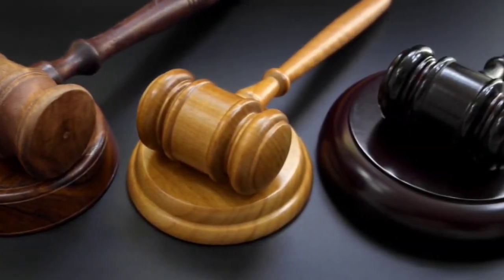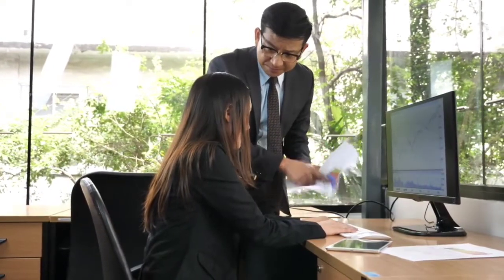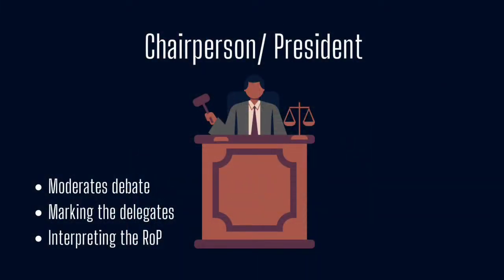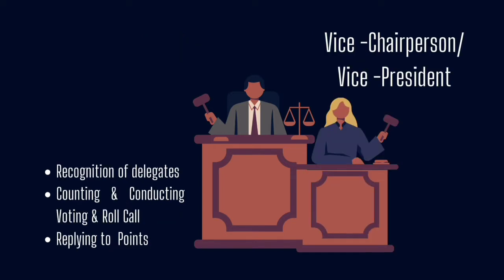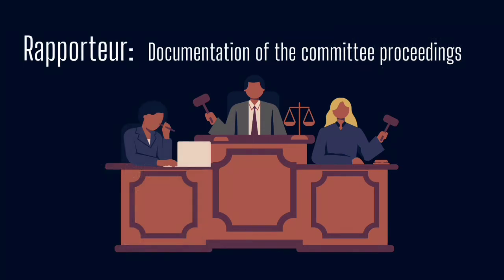Regarding chairing style, it is important to show that the applicant understands the balance between being a careless Committee Dais member and a dominant, over-indulging one. This sense of balance also varies based on the position accepted in the Committee Dais, which is made up of the chairperson or president, vice chairperson or vice president, and the rapporteur. The chair moderates the debate by marking delegates based on performance and interpreting rules of procedure. The vice chairperson recognizes delegates with motions or points, conducts voting and roll call sessions, and replies to points of parliamentary inquiry or order. The rapporteur documents committee proceedings by recording delegate motions, points, and responses.